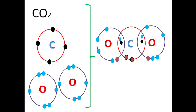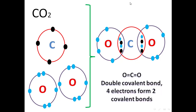We share another electron from each oxygen and two more from carbon. After sharing, oxygen contributes two electrons and carbon contributes four electrons on each side. Counting around oxygen: one, two, three, four, five, six, seven, eight — eight electrons. Carbon also has four plus four, giving eight electrons total. Because there are four shared electrons between carbon and each oxygen, each two electrons form one bond, so we have a double covalent bond.